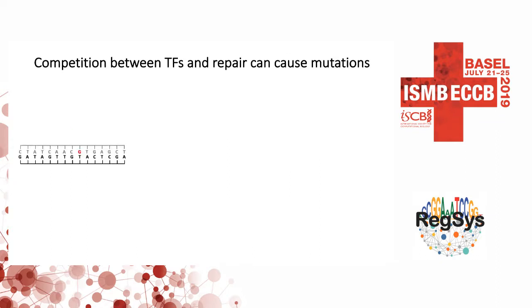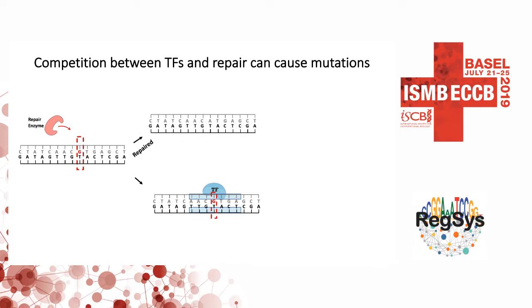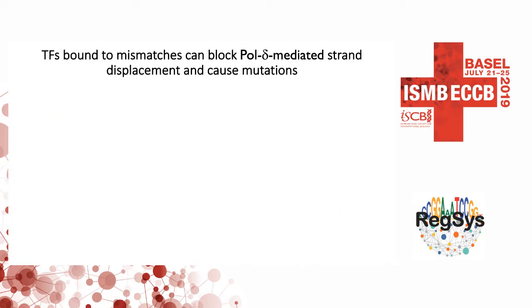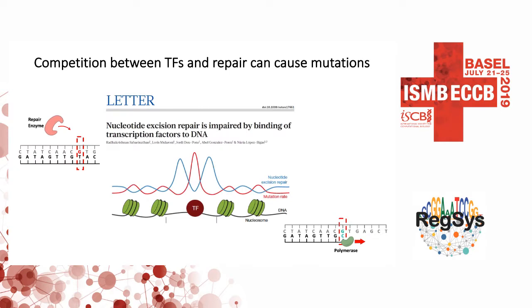Recent work in the field has looked at competition between transcription factors and repair and attributed mutations to these. Here's a diagrammatic representation. Assume you have a GT mismatch. In a normal circumstance, you see a repair enzyme correct that error, but if a transcription factor protects that site, then the repair enzyme can no longer access it, and upon replication, this unrepaired mismatch leads to a mutation. There was work out of Nuria Lopez's lab in Barcelona that recently looked at repair at transcription factor binding sites, showing a clear decrease in repair and an increase in mutation rates. A similar analogy could be drawn for mismatches.